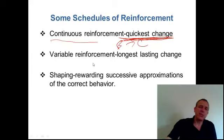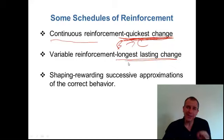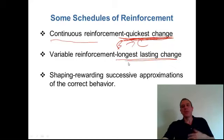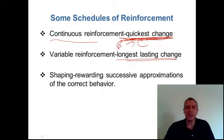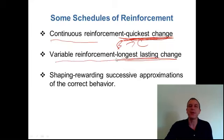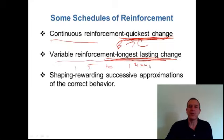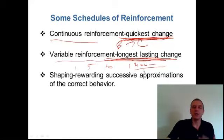Variable ratio reinforcement produces the longest lasting change. You never know when you're going to get that reinforcer. You never know when the boss is going to come by — it might be five times a day, or they might not come by for a whole week. But the whole time you're busy working because you never really know when the boss is going to come by. It might come after one day, after five days, after ten days, after one hour. You just never know.